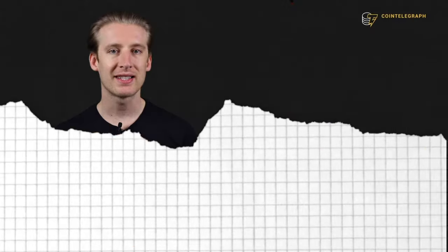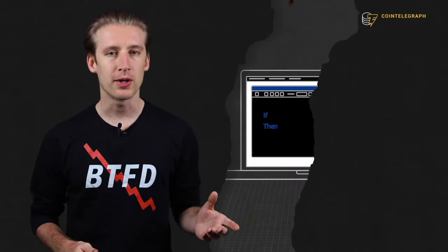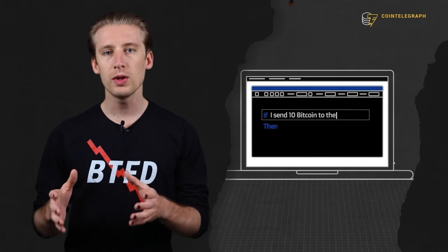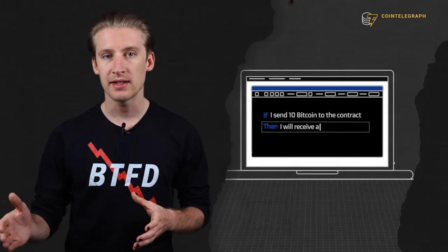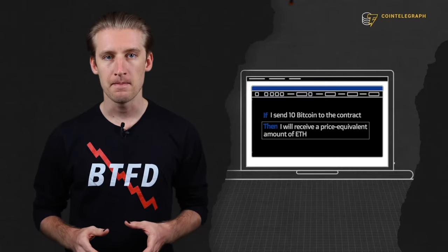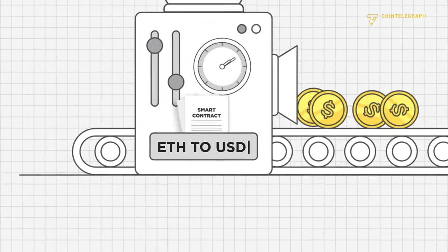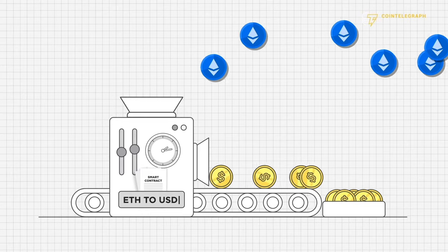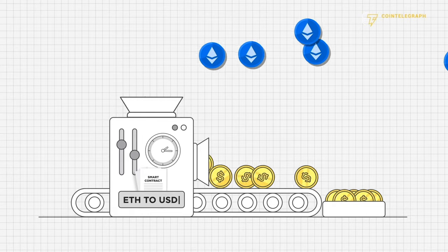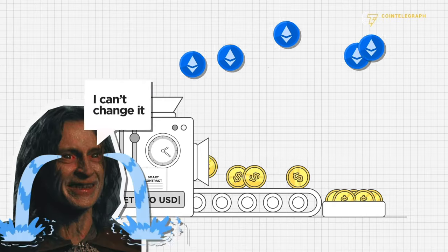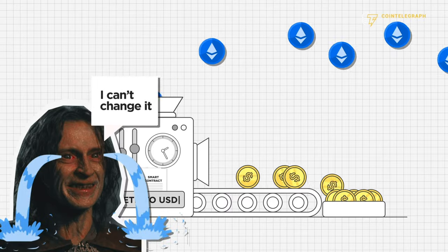Deterministic. This goes back to the if-then property I was talking about earlier. Smart contracts only perform the actions they were designed to, given the requirements are met. The code gives them rigidity. The outcome will always be the same no matter who executes them. You could be Darth Vader or Rumpelstiltskin — smart contracts don't care. No matter who interacts with it, the rules and results are the same.